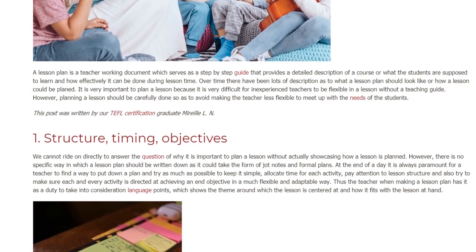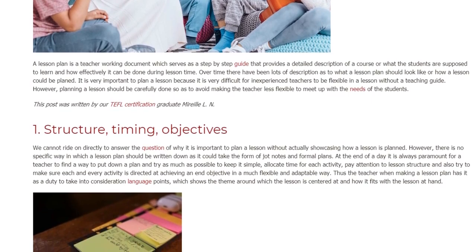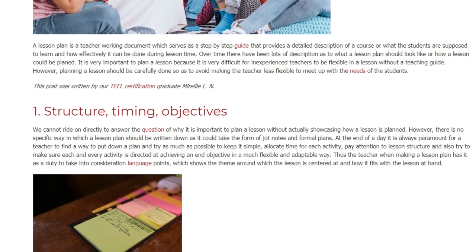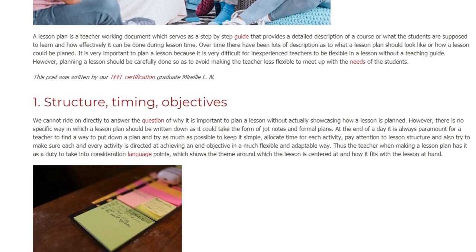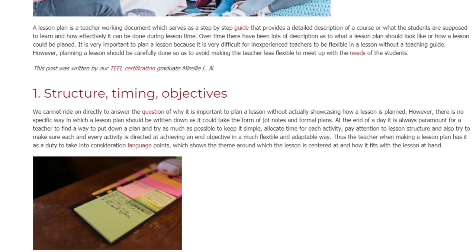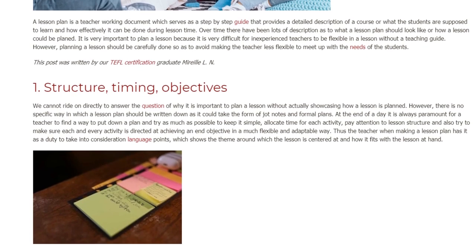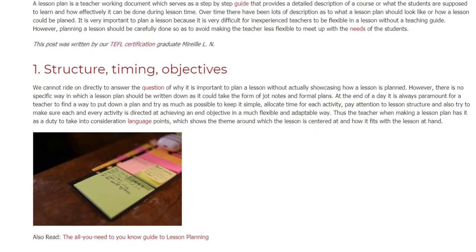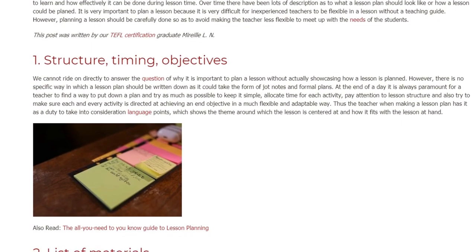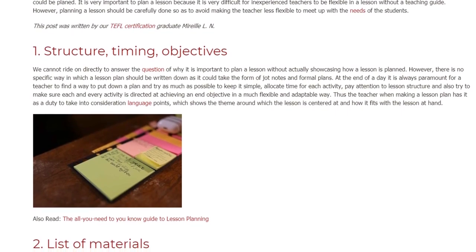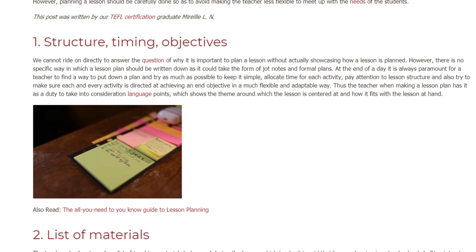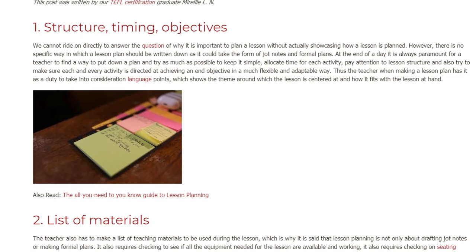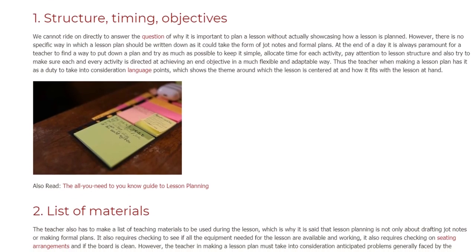There is no specific way in which a lesson plan should be written down, as it could take the form of jot notes or formal plans. At the end of the day, it is always paramount for a teacher to put down a plan and keep it simple, allocate time for each activity, pay attention to lesson structure, and make sure each activity is directed at achieving an end objective in a flexible and adaptable way. The teacher must also take into consideration language points, which show the theme around which the lesson is centered and how it fits with the lesson at hand.